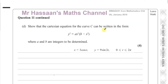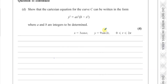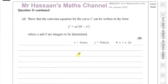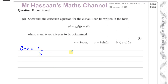Now for the last part of the question. The Cartesian equation is the equation in terms of x and y only, without the third parameter t. So we need to eliminate t. When you have trigonometric parametric equations, the easiest approach is to use trig identities. I'll try to make cosine t and sine t the subject from each equation.